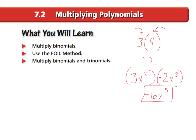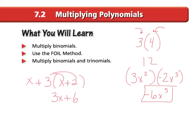Today you're going to be multiplying binomials times binomials. For example, x plus 2 times 3 is a monomial times a binomial — you distribute and get 3x plus 6. But today you're going to add one more term. You have to multiply everything in one parenthesis times everything in another. Sometimes people call it double distributing — you're not just distributing the 3, you're also distributing the x.